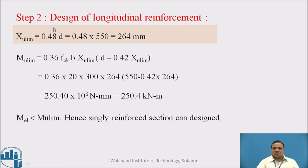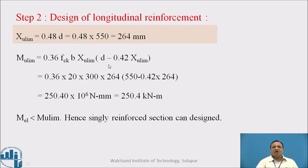Second step: design of longitudinal reinforcement. Xu limit for Fe415 is 0.48d, which equals 264 mm. MU limit is 0.36 × fck × b × Xu_limit × (d minus 0.42 × Xu_limit), as per Annex G-1.1(c) of IS 456. We get MU limit as 250.4 kNm. Since MEL (194.41 kNm) is less than MU limit (250.4 kNm), a singly reinforced section can be designed.